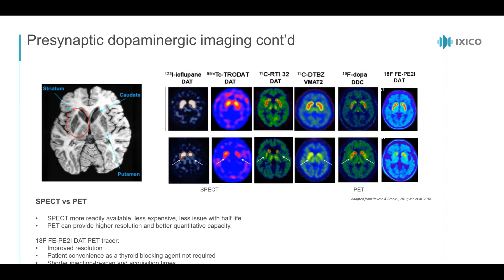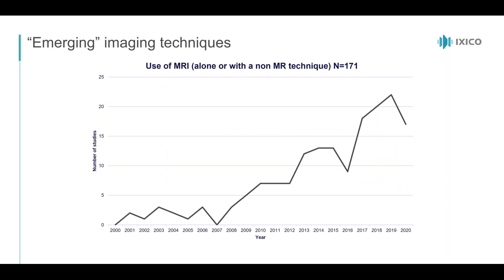Looking at a quick search through ClinicalTrials.gov, there has been a steady increase over recent years in the use of MRI alone or combined with another non-MR technique. This highlights the growing interest in non-DAT SPECT and PET techniques, and in using combinations of imaging markers to better understand Parkinson's disease pathology and identify subtypes.